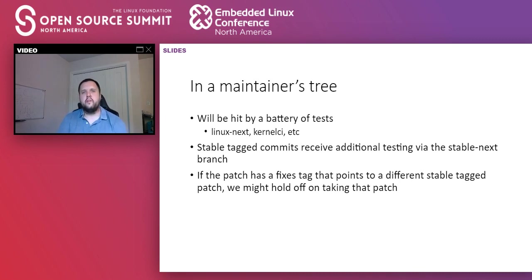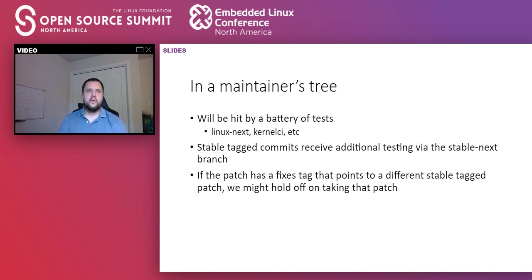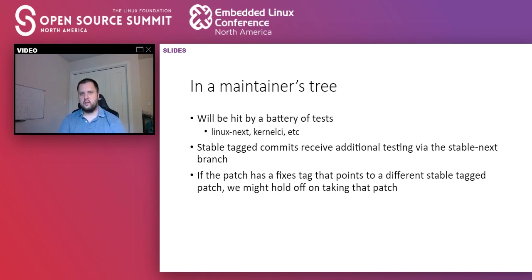At that point, if a patch has a fixes tag pointing to a different patch that is itself a fix, we might avoid taking that other patch into the stable tree because we know it's buggy and there's a fix waiting in the maintainer's tree. We can't take both patches at this point because the new patch isn't upstream yet, which violates our rules. But we can delay inclusion of the original patch until the fix is ready and any discussion around it has settled.